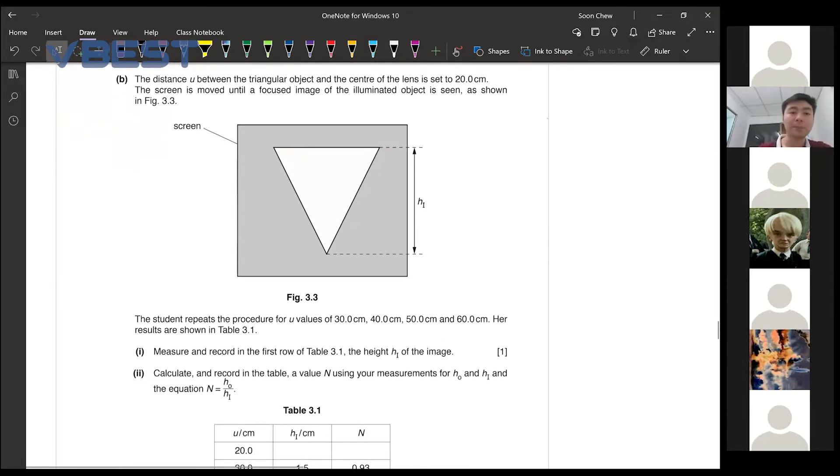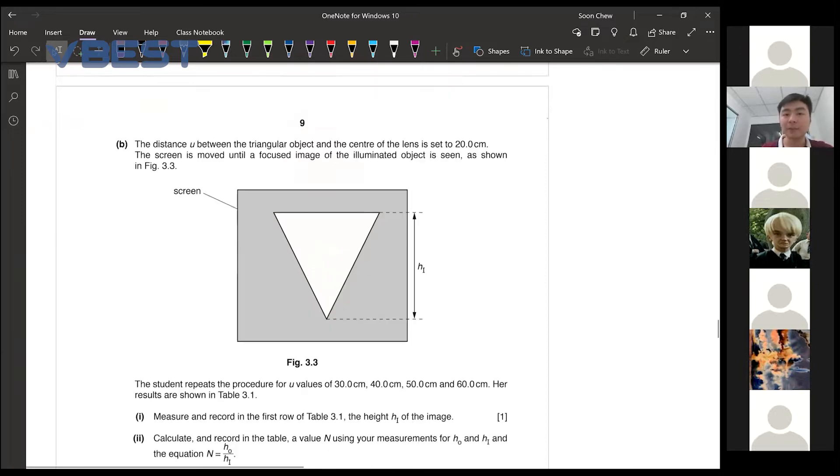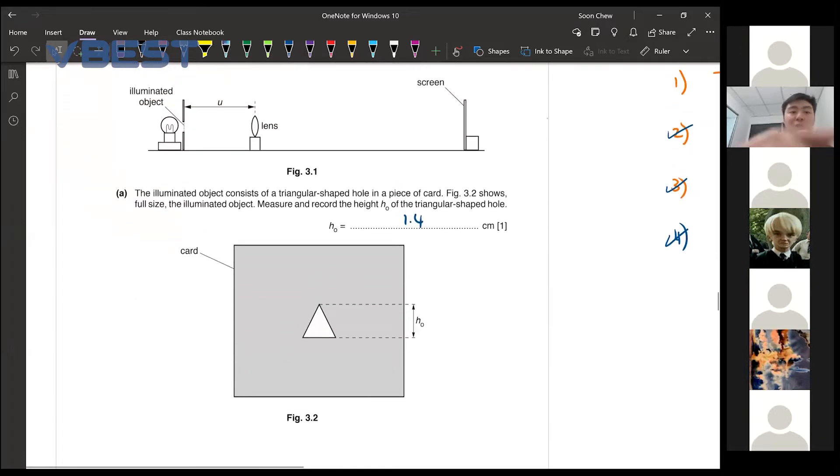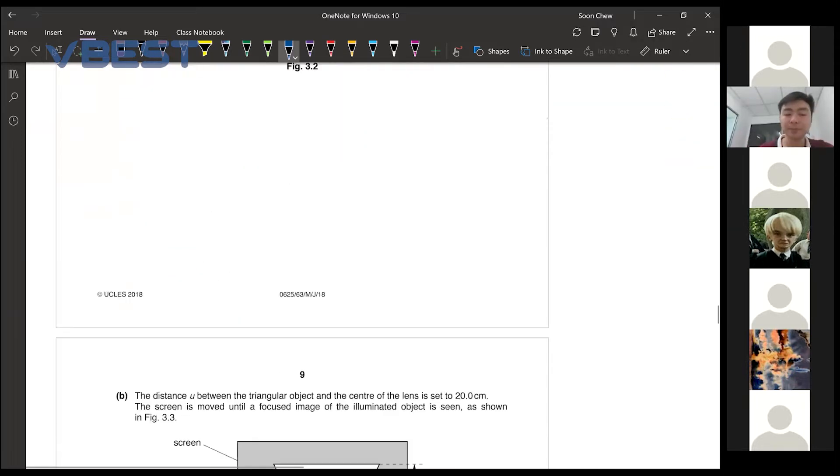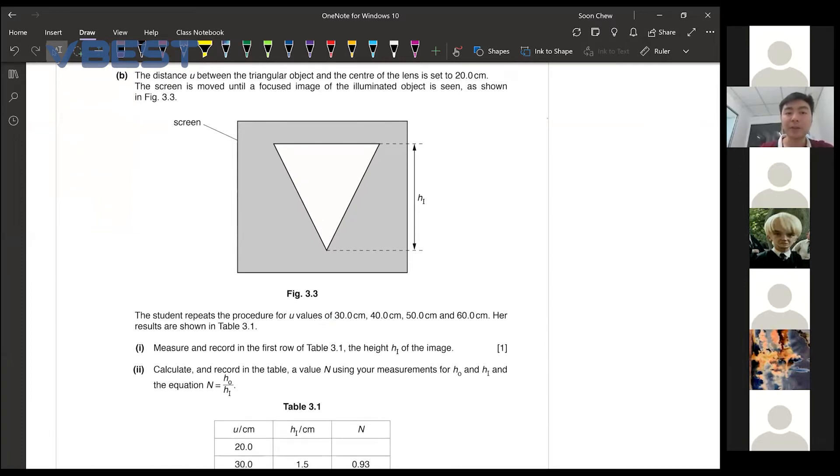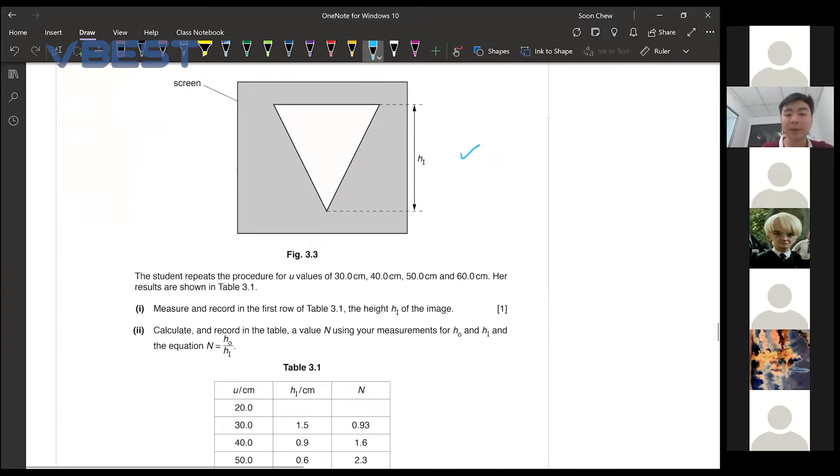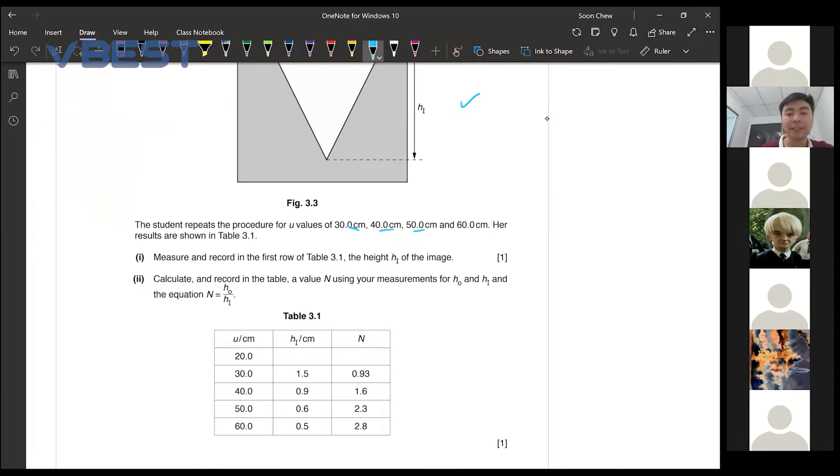Now, for part B. The distance U between the triangular object and the center of the lens is set to 20cm. They are referring to this portion here that sets it to 20cm already. The screen is moved until a focused image of the illuminated object is seen. Then, he repeats for 30, 40, 50cm and 60cm. Her results are in the table.